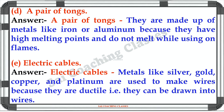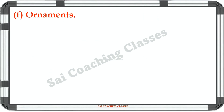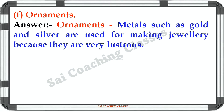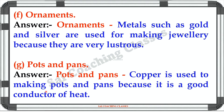D: Electric cables. Metals like silver, gold, copper and platinum are used to make wires because they are ductile, that is they can be drawn into wires. Ornaments: Metals such as gold and silver are used for making jewellery because they are very lustrous. D: Pots and Pans. Copper is used to make pots and pans because it is a good conductor of heat.